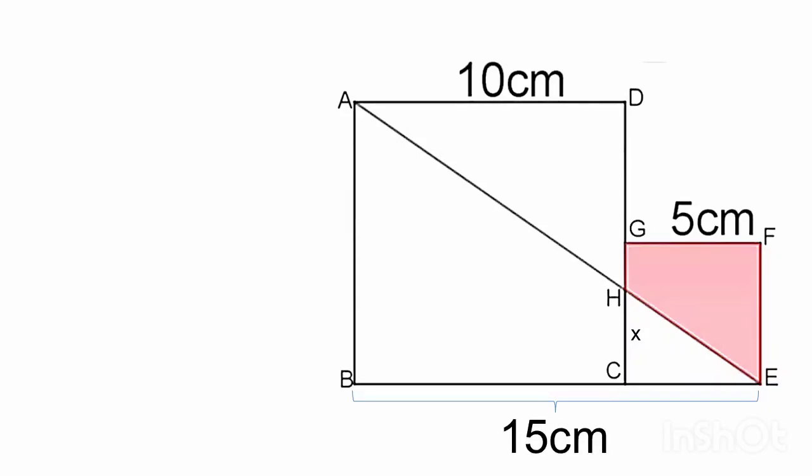Now the two triangles, triangle ABE and triangle HCE are similar. So we can write AB divided by BE is equal to HC divided by CE.